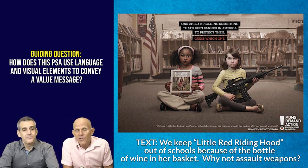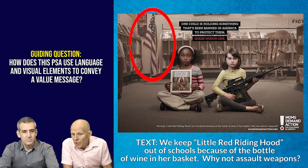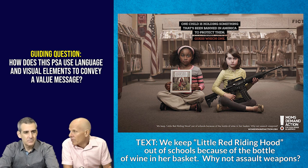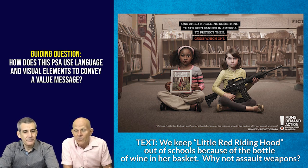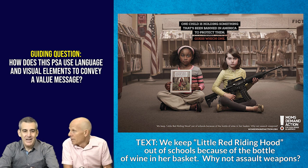Sticking with our acronym, the C for context and culture is fairly clear. We see the American flag in this image - this is an American organization, and unfortunately this is a predominantly American problem with the rampant gun use, gun violence, and the countless school shootings that have occurred.